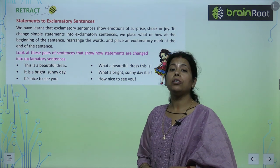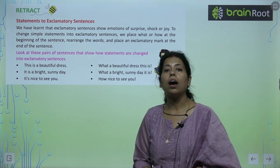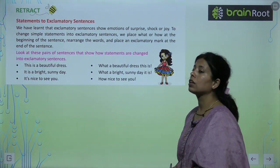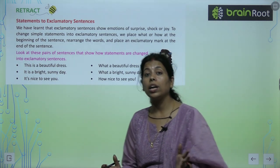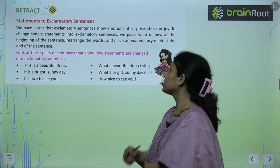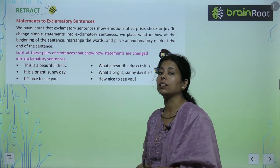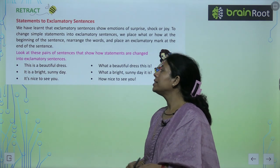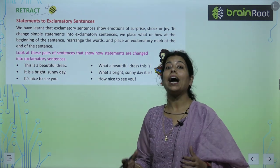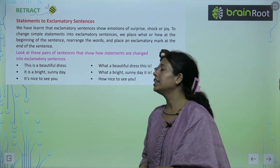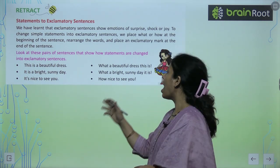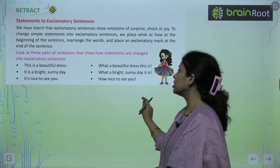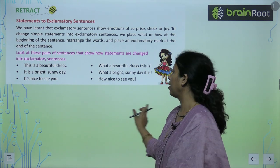Statements to exclamatory statements — आपको exclamation mark देना है। We have learned that exclamatory sentences show emotions or surprise — वाव, हुर्रे। तो कैसे change करेंगे: 'This is a beautiful dress' → 'What a beautiful dress it is!' 'It is a bright sunny day' → 'What a bright sunny day it is!' 'It's nice to see you' → 'How nice to see you!' तो इनमें emotions के साथ exclamatory mark show करना है।